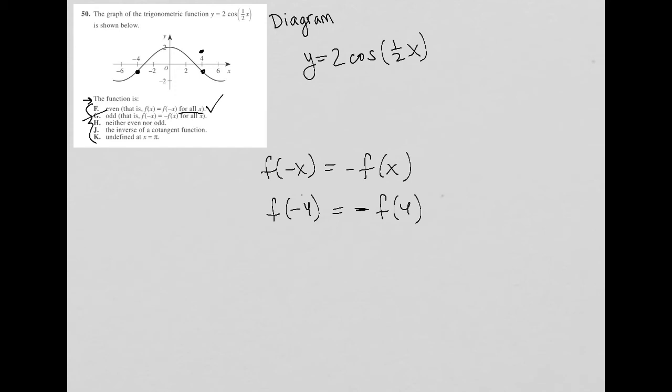Neither even nor odd, choice H says, well, I liked F, so even looks good to me, so I'm going to cross that out. The inverse of a cotangent function, so cosine is not the inverse of a cotangent. So hopefully you know that from trigonometry. So that's not a good answer.